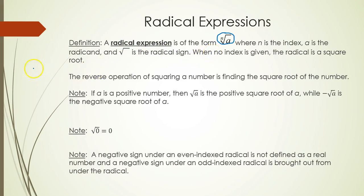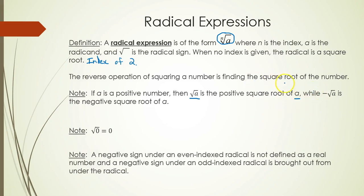When there is no index given, the radical is understood to be a square root. Square roots always have an index of 2. The reverse operation of squaring a number is finding its square root. It's important to note that when we take the square root of a quantity, it's always going to be a positive result. The only time the result will be negative is when there is a negative sign outside of the square root.